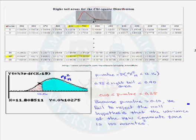Knowing our p-value, we can decide whether we will reject or fail to reject our null hypothesis. Because the p-value is greater than 0.10, we fail to reject the null hypothesis that the variance of the new commute time is 100 minutes squared.